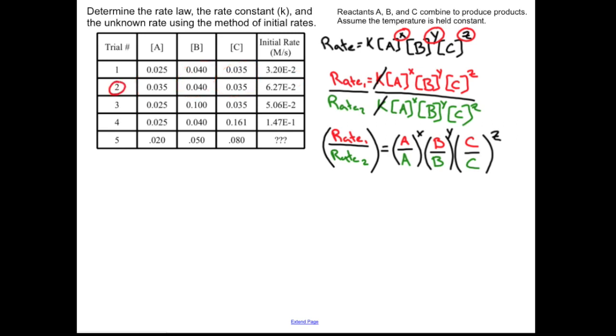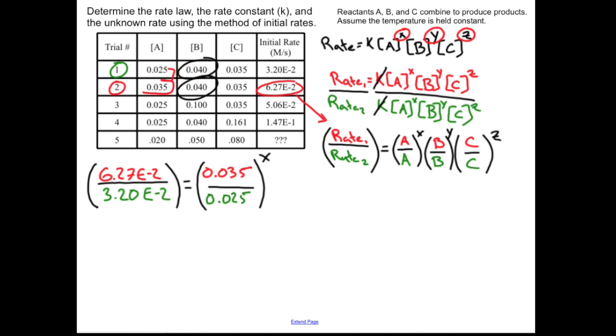I'm going to use trial two as the numerator and trial one as the denominator. I'm going to plug in my initial rate here, 6.27E-2, and trial one. Then the rate information I'm going to put in is 0.035 over 0.025 raised to the X. Notice if I do the same thing for the B values and the C values, I'm dividing the same number by itself.